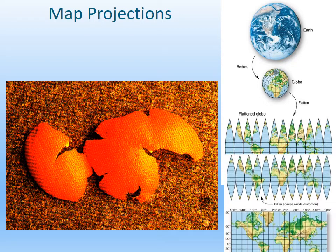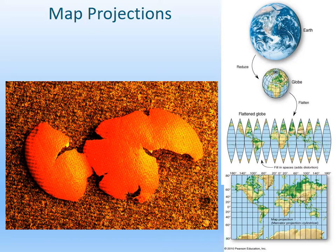That's because if a map like this is being made, they add additional land or water to the map to make it look nice. Unfortunately, areas to the north and to the south are extremely distorted. In fact, based on this map, Greenland and Africa look about the same size, but in reality Africa is about 10 times bigger than Greenland.